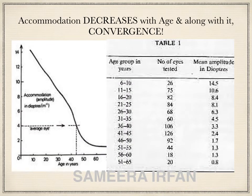Convergence and sensory fusion are mandatory for developing the motor locking system and motor ocular alignment. It is important to remember that convergence is linked with accommodation in the brain, and both are binocular phenomena. The power to converge and accommodate to see near objects is maximum in young age, but the amplitude decreases with increasing age, as shown in the graph.